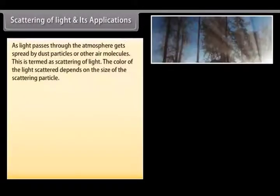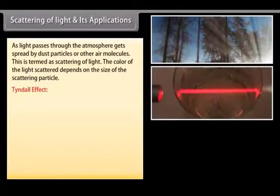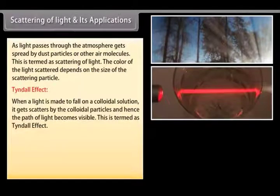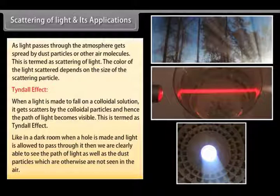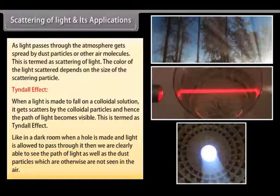Scattering of light and Tyndall effect: As light passes through the atmosphere, it gets spread by dust particles or other air molecules — this is termed scattering of light. The color of light scattered depends on the size of the scattering particle. The Tyndall effect occurs when light falls on a colloidal solution and gets scattered by the colloidal particles, making the path of light visible — like in a dark room when light passes through a hole, making the path of light and dust particles clearly visible.